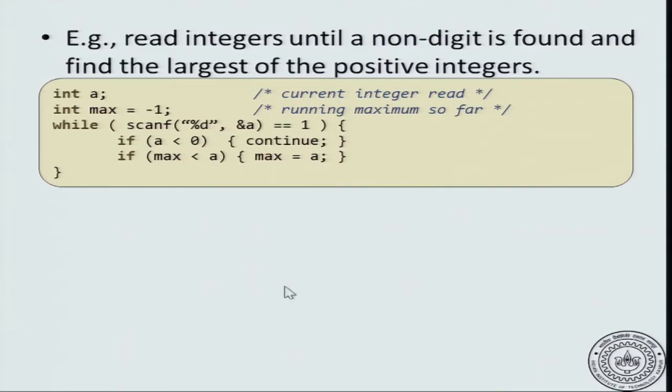Here is the code for doing that. While the currently read input is a number, that is why the %d succeeded was read and one entry was correctly read. If a number was read, check whether the number is negative. If the number is negative, continue. Continue means go to the next iteration of the loop. Do not do what is remaining in the loop.